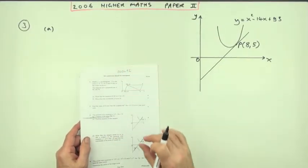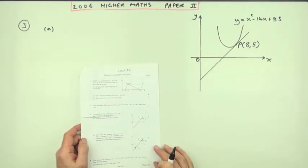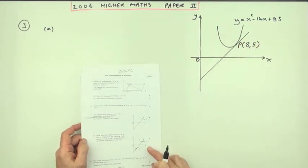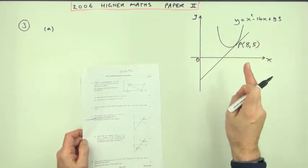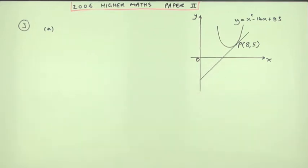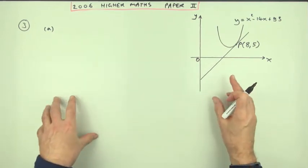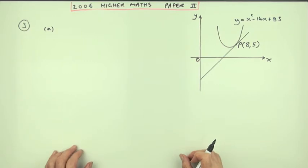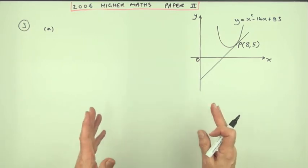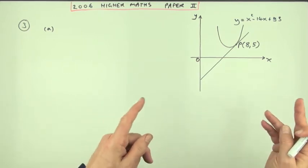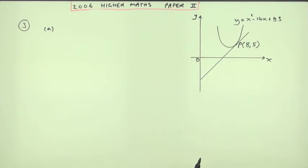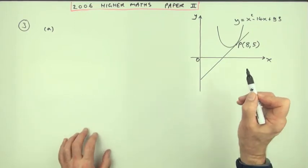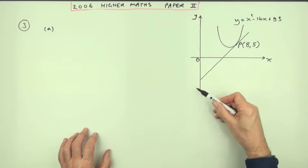Number three from the 2006 Higher Maths paper 2: tangent to a curve, in this case a parabola. Part A, for four marks, find the equation of this tangent. There are actually two ways of doing this; only one is shown in the marking scheme. The other way is lengthier — I'll put that under alternatives at the end. The most direct way is as follows.